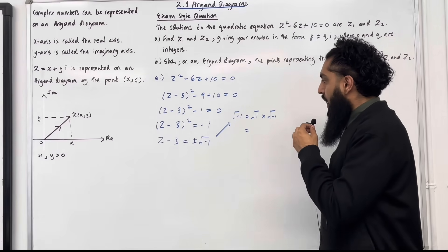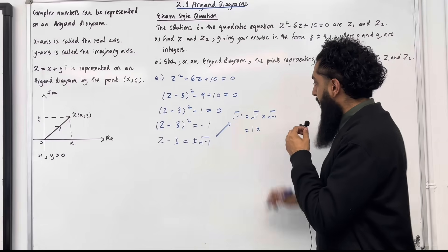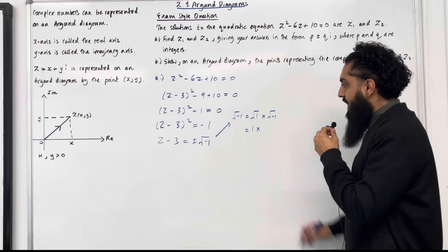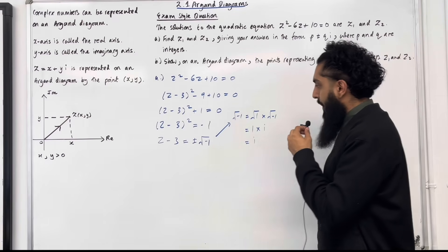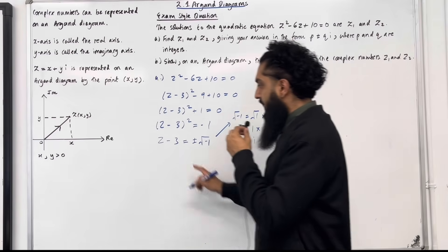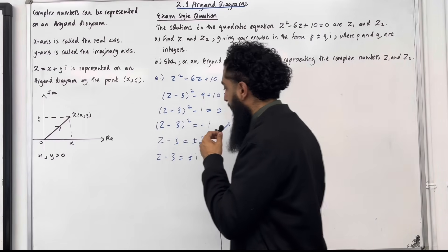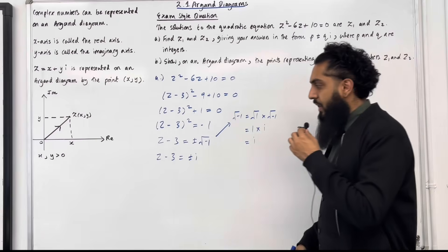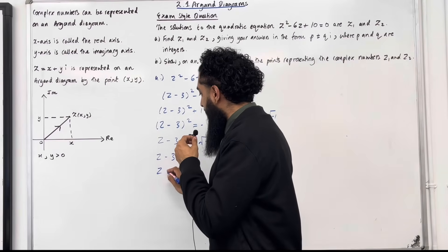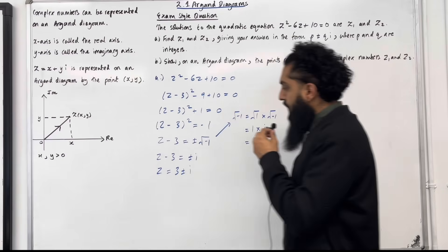We know that √(-1) is defined as i. So 1 times i is just i. If I go back to this equation here I've got z - 3 = ±i. If I make z the subject I get z = 3 ± i.